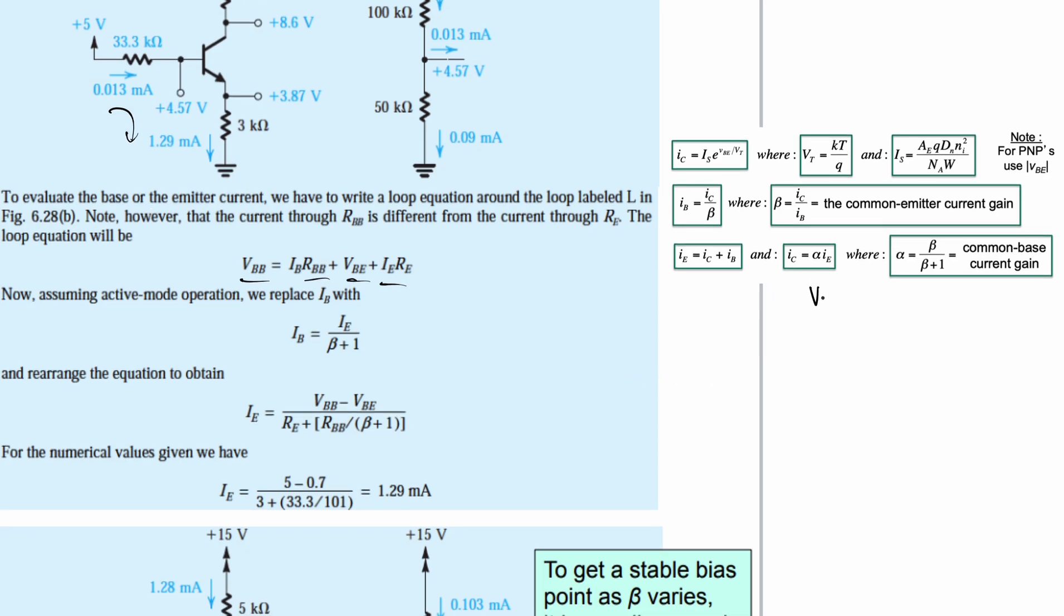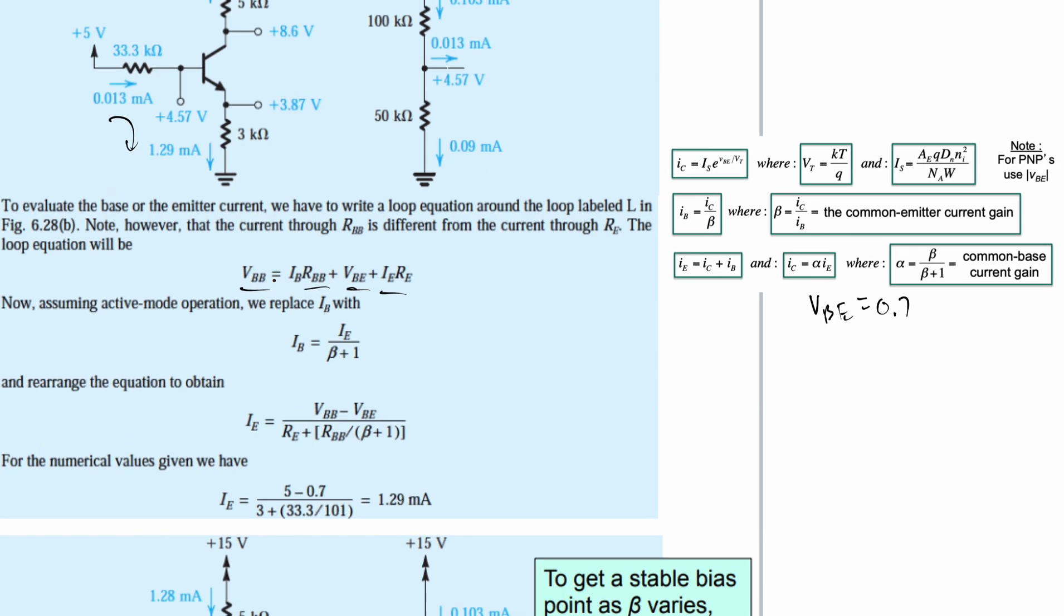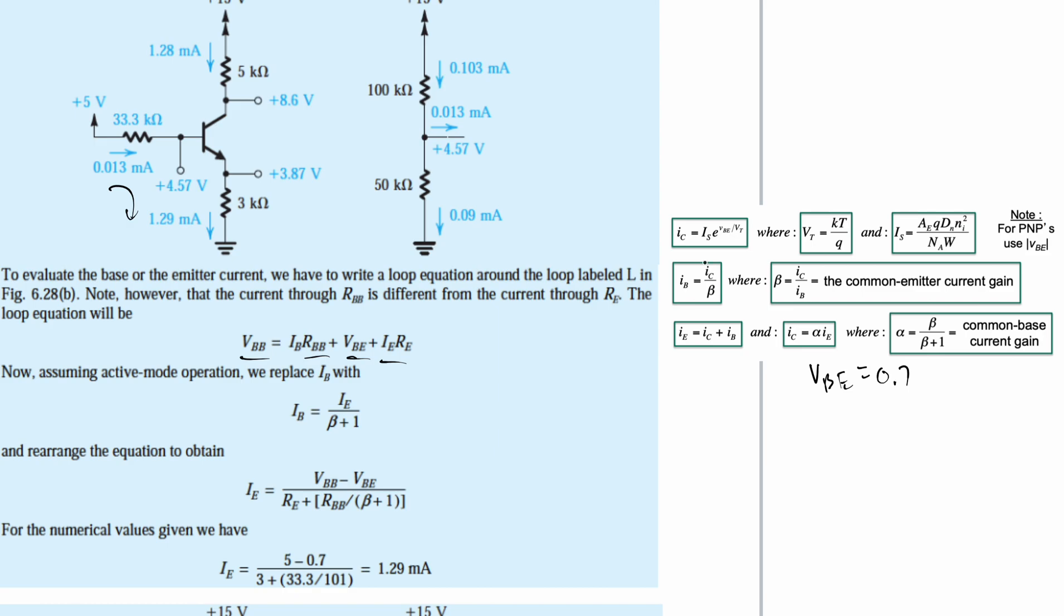So VBE, we can even put this in the notes, and if it's not there, I'm going to include it. VBE is equal to 0.7 for something that's like this, and then we are going to just substitute in our IB equation here. So we only have one unknown, which is IE, and then we solve for this. We get 1.29 milliamps, and that's for the current for the emitter. And then we can keep using the other equations that we have here once we have our emitter and solve for the other different values.